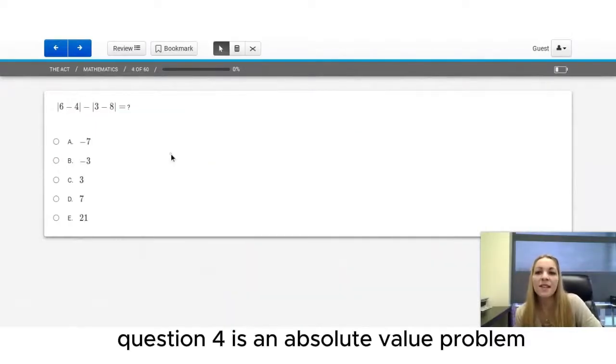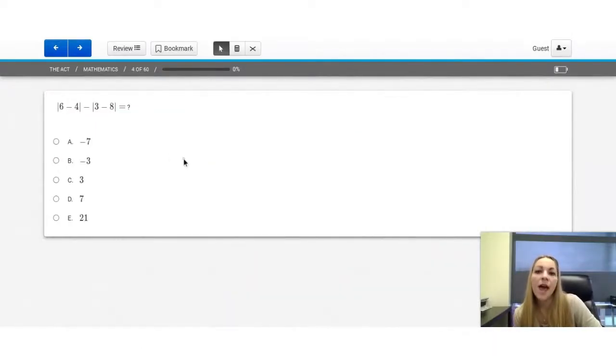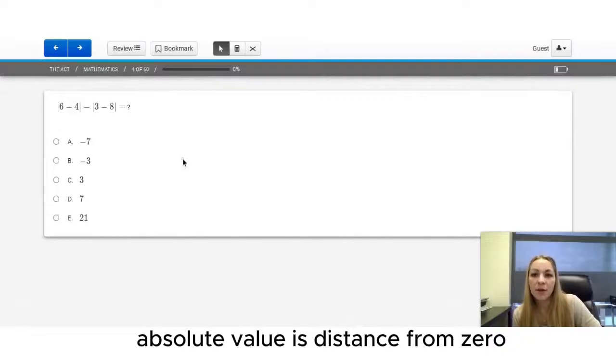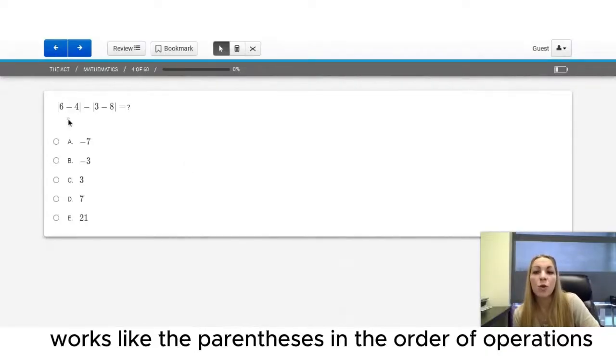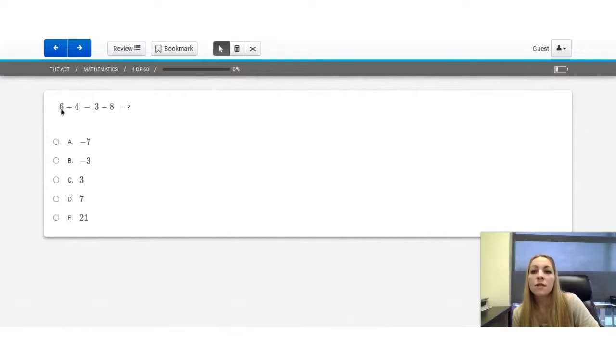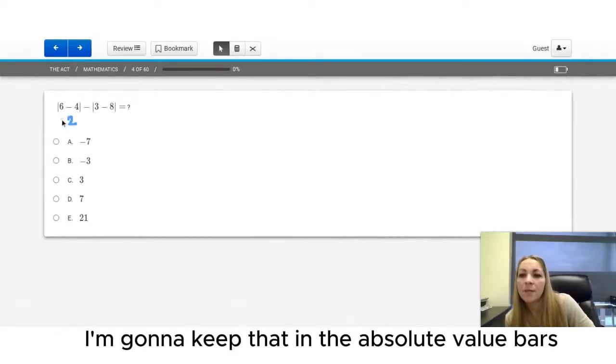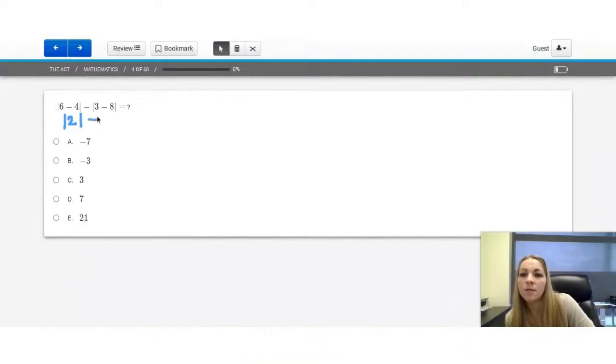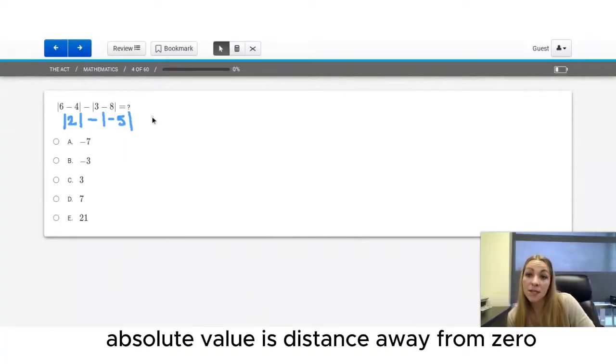Question 4 is an absolute value problem. Absolute value is distance from 0. Inside the absolute value works like the parentheses in the order of operations. So I'm going to take care of the inside of the absolute value first. 6 minus 4 is 2. I'm going to keep that in the absolute value bars. Minus 3 minus 8. That's negative 5. Absolute value is distance away from 0. 2 is 2 away from 0. I have my minus sign. And negative 5 is 5 away from 0.